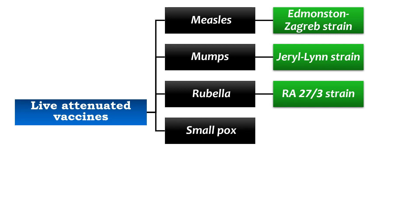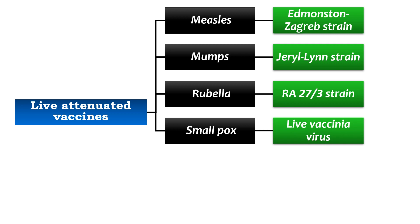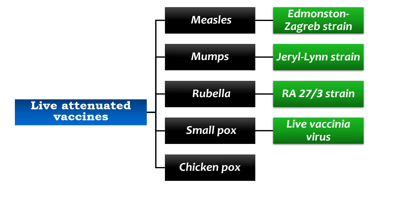For smallpox, an unattenuated live vaccinia virus is used for vaccination. It is highly effective and given as a single dose between one to two years of age. For chickenpox, a live attenuated vaccine derived from the Oka strain is used.